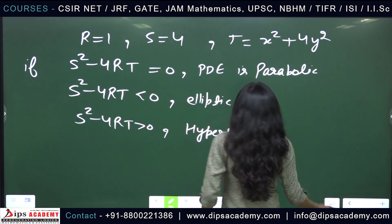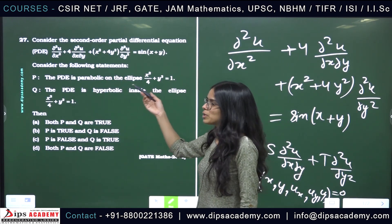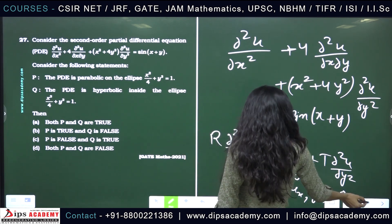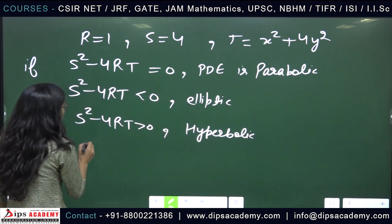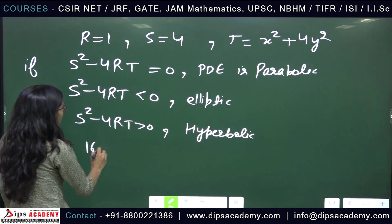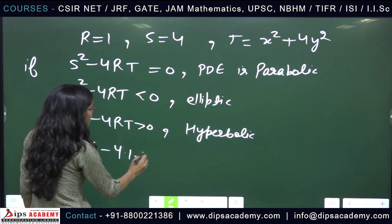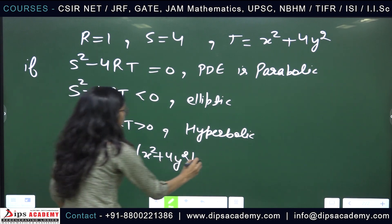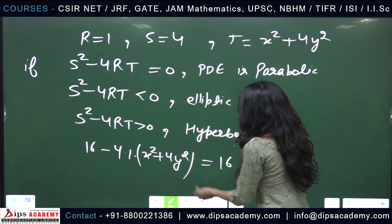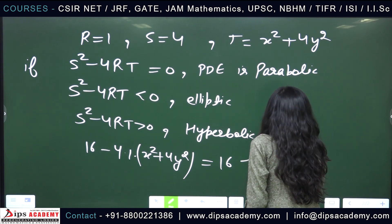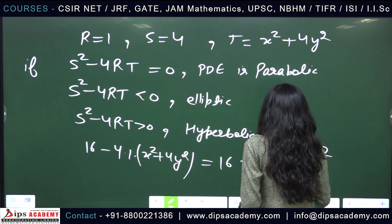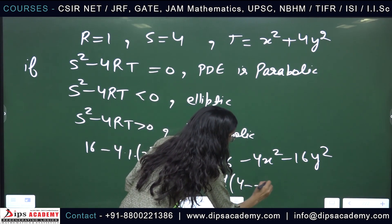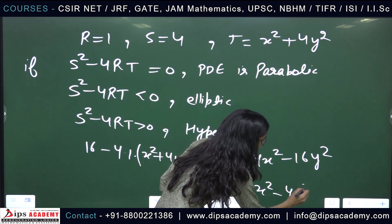Statement P claims the PDE is parabolic on the ellipse x²/4 + y² = 1. We compute S² − 4RT = 16 − 4·1·(x² + 4y²). Taking 4 as common, this becomes 4·(4 − x² − 4y²).